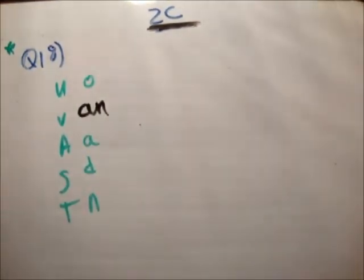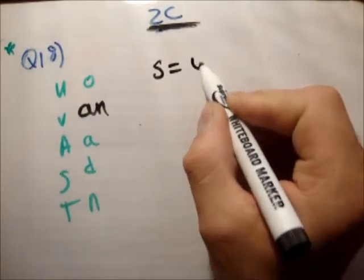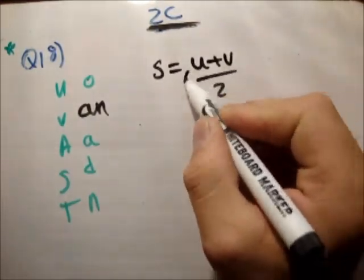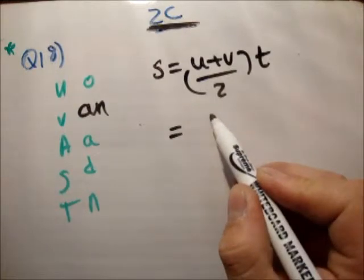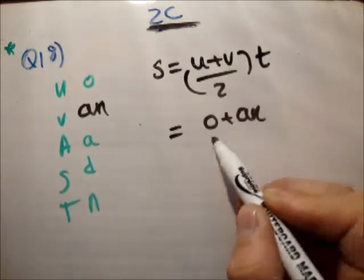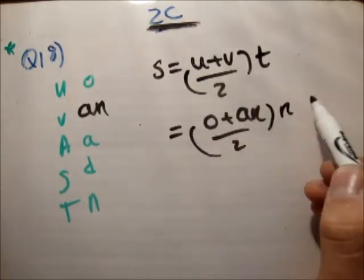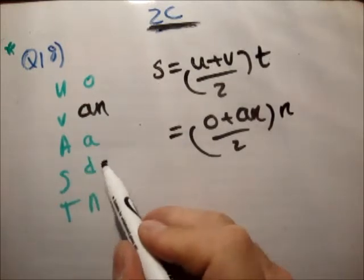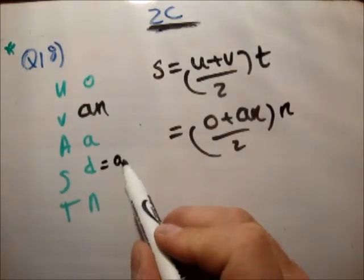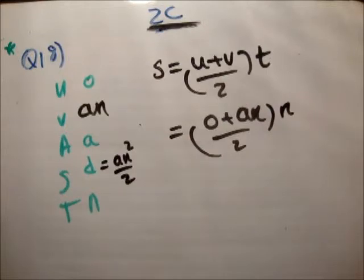All right. Get the distance. s is equal to u plus v over 2 times t. Is equal to 0 plus an over 2 times n. So it's an squared over 2. Like that. Do we know anything else? Not really.